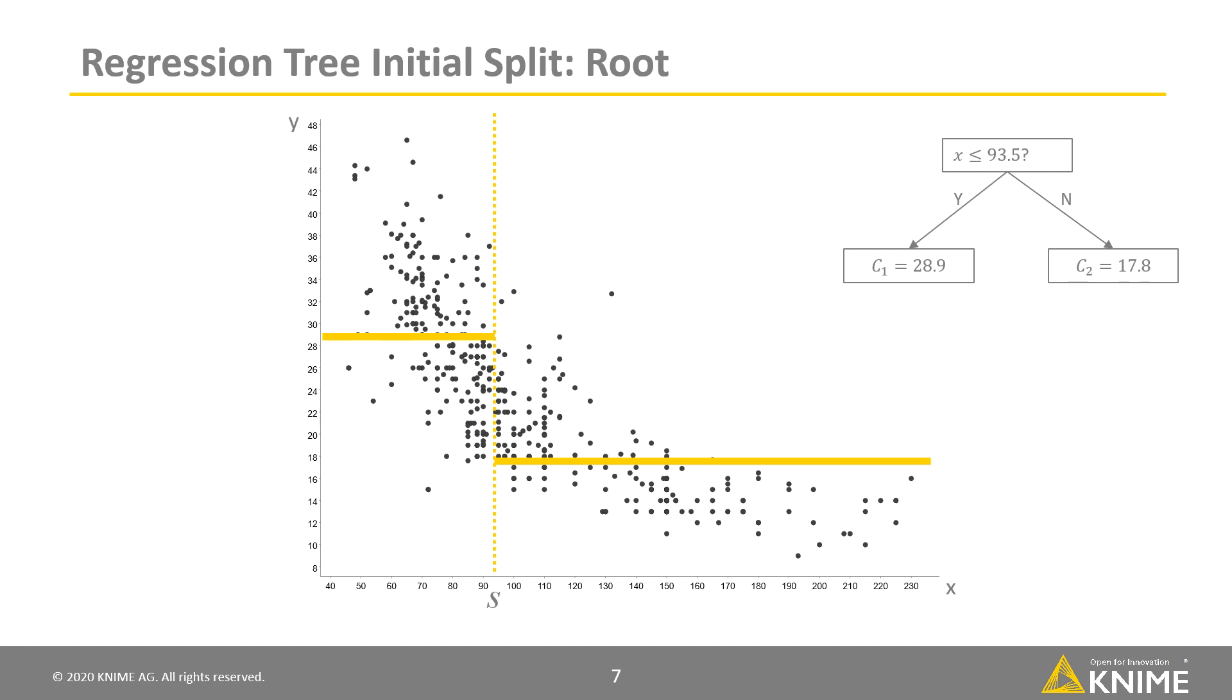Any distinct value of x can be considered as a potential boundary. In this example, we found that the boundary 93.5 minimizes the total error among all possible boundary values. This will become the root of the tree as we can see.